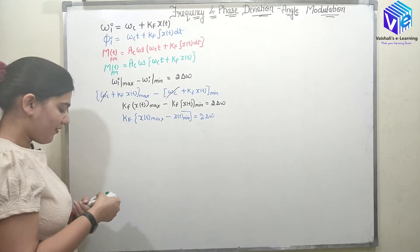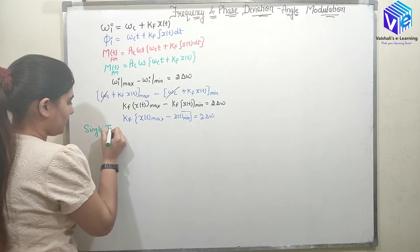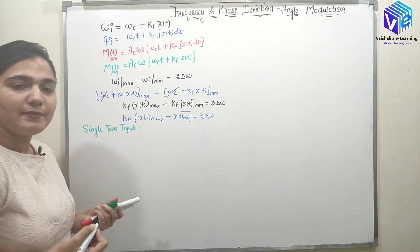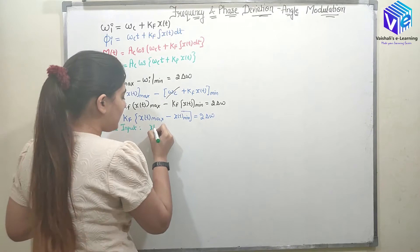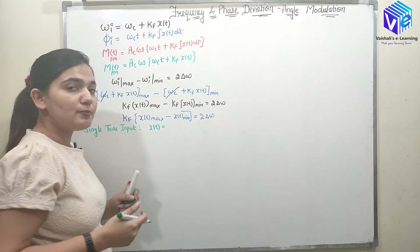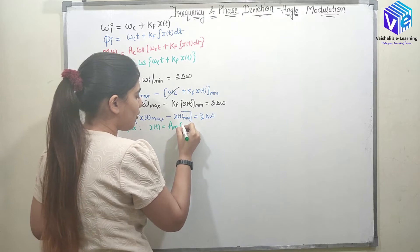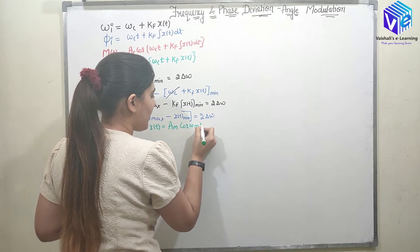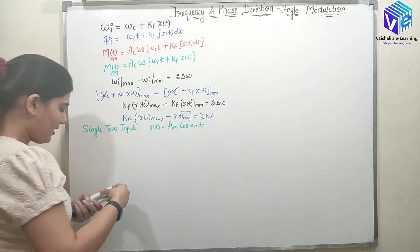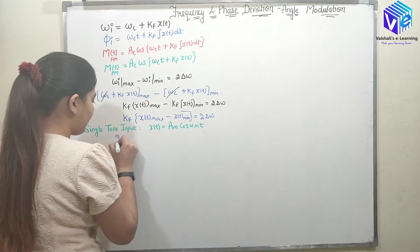Now I can find the frequency deviation for different kinds of x(t). Considering a single tone input, which contains only one frequency component, I take x(t) = A_m cos(omega_m*t). This is the single tone input. I will now put this value into the equation to find the frequency deviation.